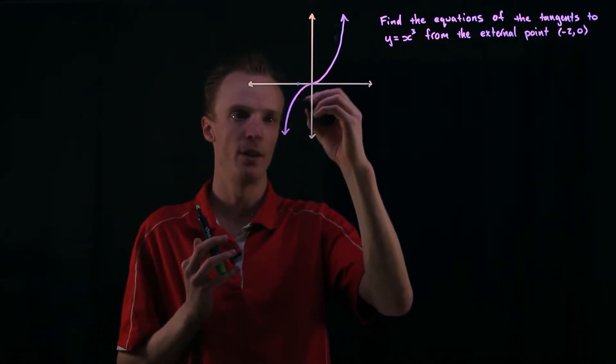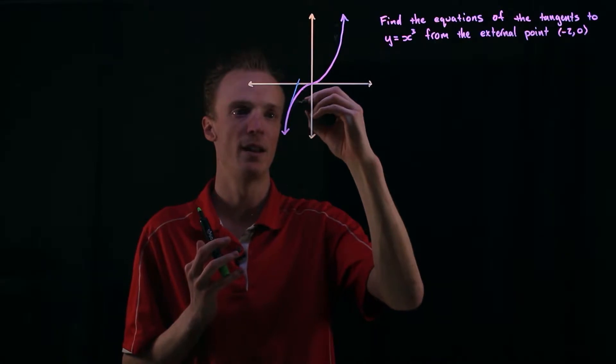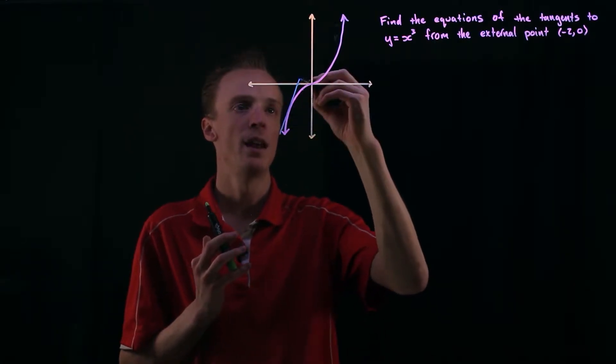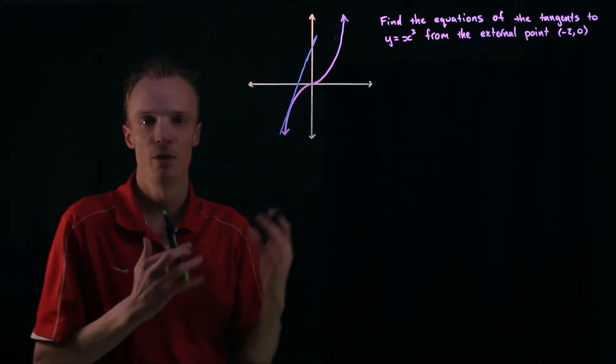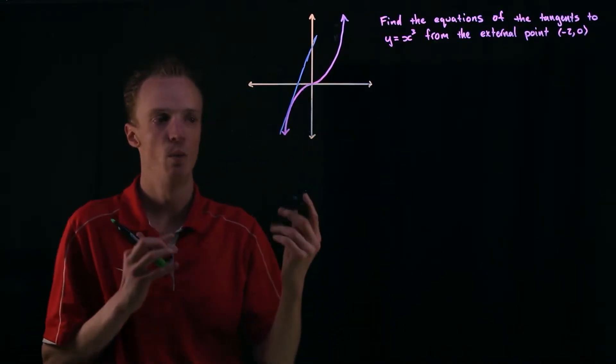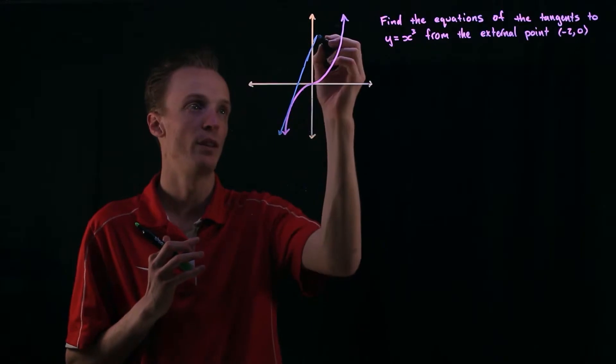Now the obvious one that we can probably see is we can probably draw a linear line here somewhere and that linear line will form a tangent to the function there. But often with these functions there's more than one. So you can see that there's one just in here.